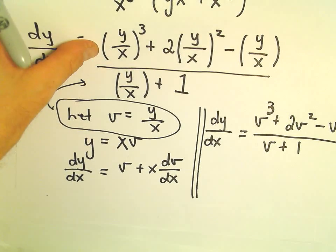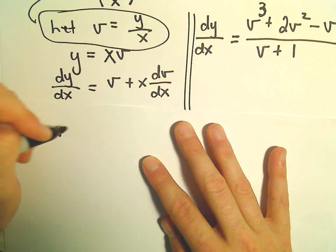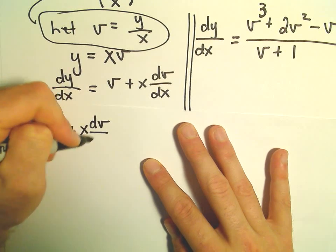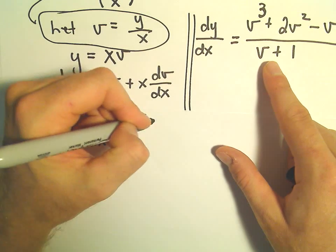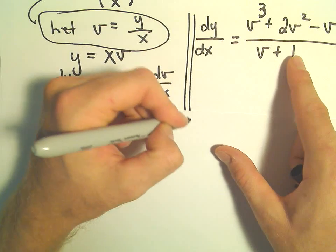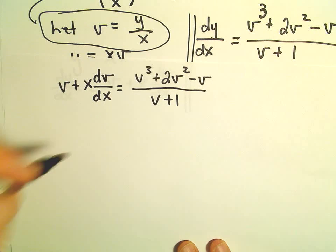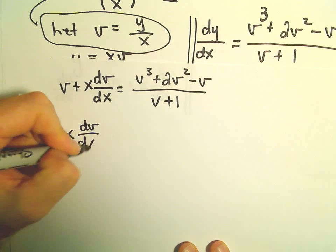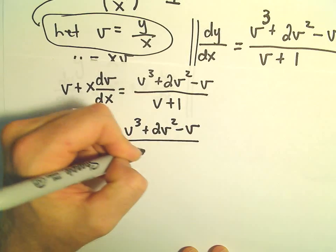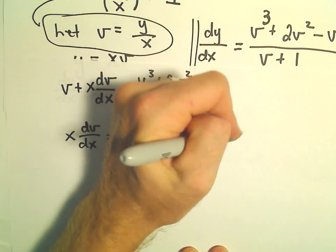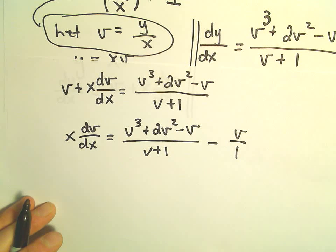Now we're going to set these two expressions equal to each other and we'll have a separable differential equation. We'll set v + x·(dv/dx) equal to (v³ + 2v² - v)/(v + 1). I'm going to subtract v from both sides, writing it as v/1 in order to combine as a single fraction with a common denominator of v + 1.